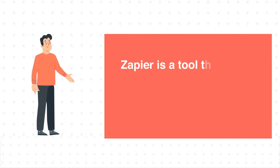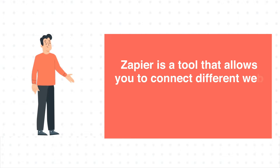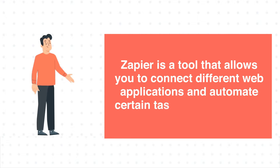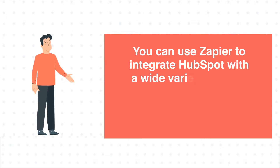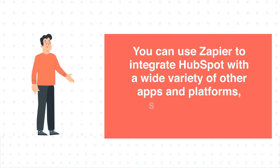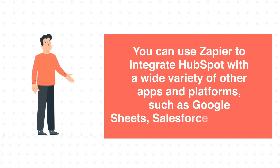Zapier is a tool that allows you to connect different web applications and automate certain tasks between them. You can use Zapier to integrate HubSpot with a wide variety of other apps and platforms, such as Google Sheets, Salesforce, and Slack.